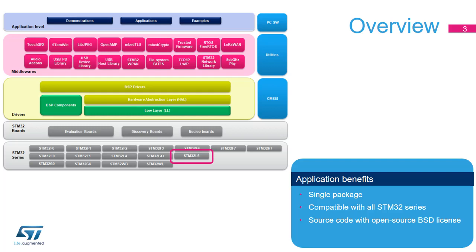The low level consists of Hardware Abstraction Layer (HAL) and Low Layer (LL) drivers with examples. The middleware level provides a set of libraries with examples, including RTOS, USB Device, USB Power Delivery, and Trusted Firmware. The application level provides demonstrations for use on ST boards.